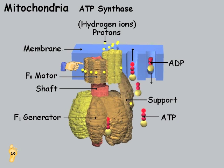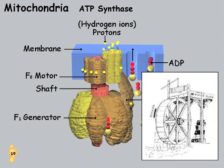The motor generator sets are anchored in the membrane. The principal components are the motor, the shaft, the generator, and the support that holds it all together. The motor generator sets use the same principle as the water wheel, where the falling water turns the paddle wheel to generate power.